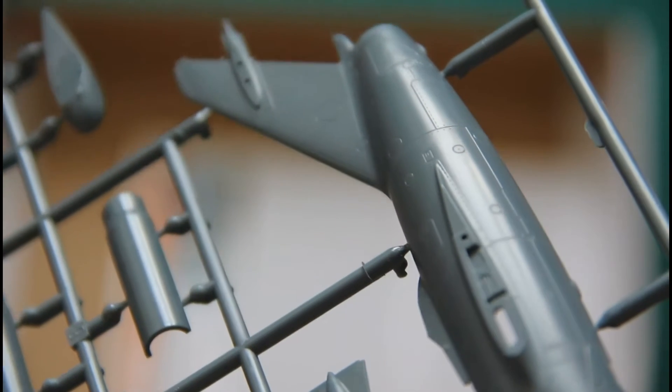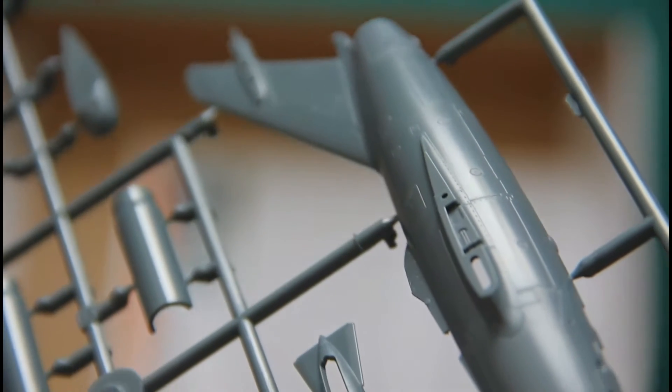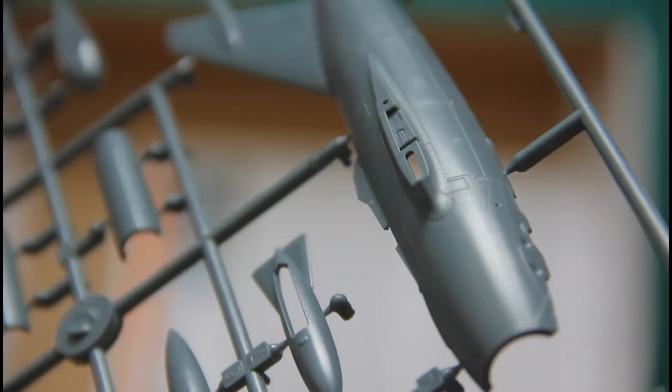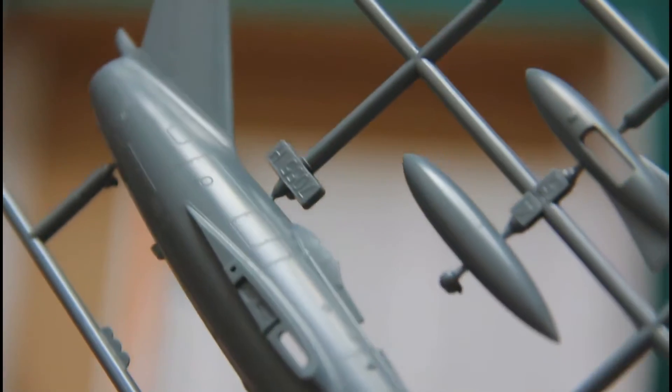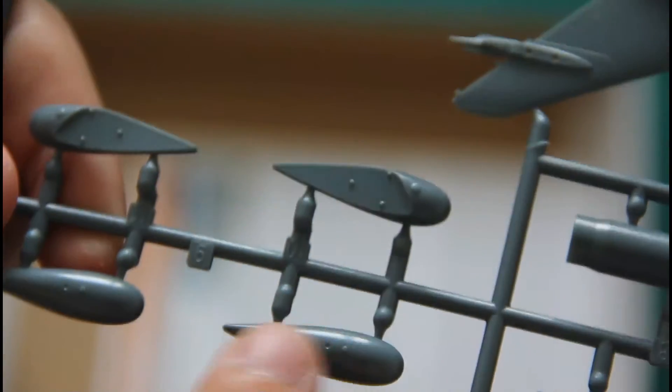Moreover here you can appreciate all this detailization with recessed panel lines and rivets on the fuselage. Here is another half. Those parts would be used for the engine exhaust tube and of course we have several types of the external tanks and there will be available resin tanks also which were featured in the Royal Pack with UT versions.